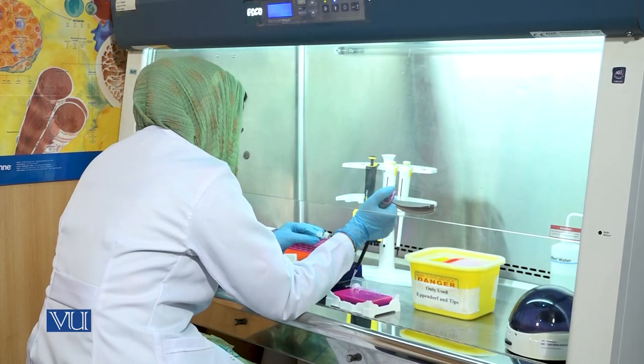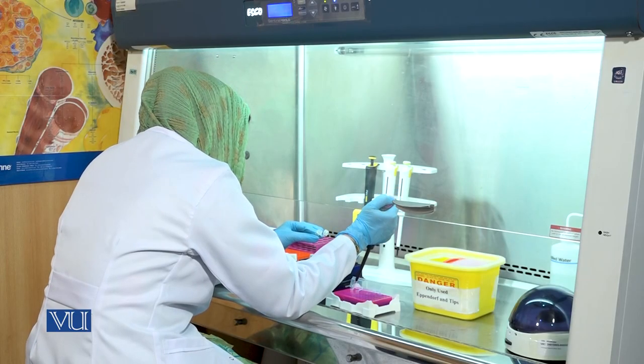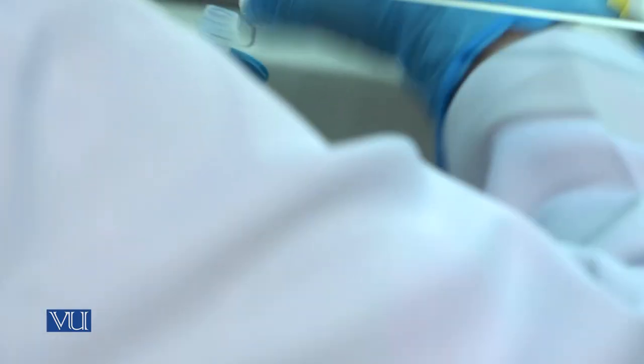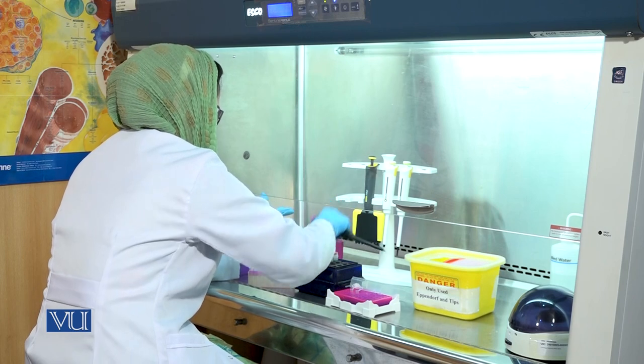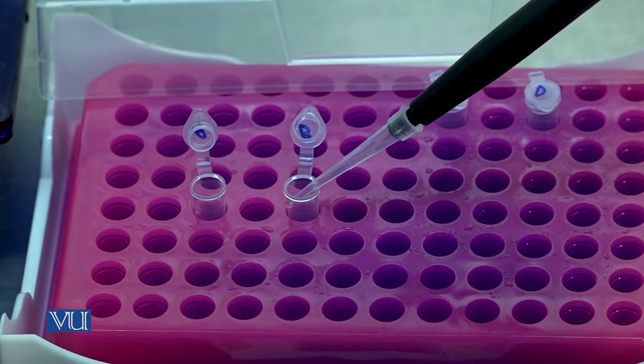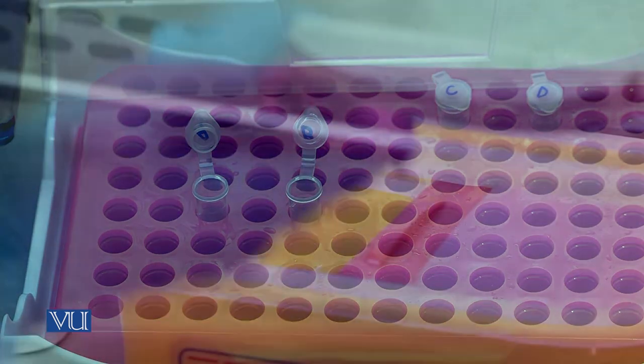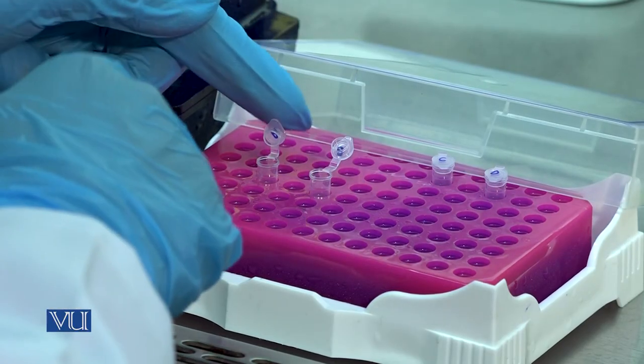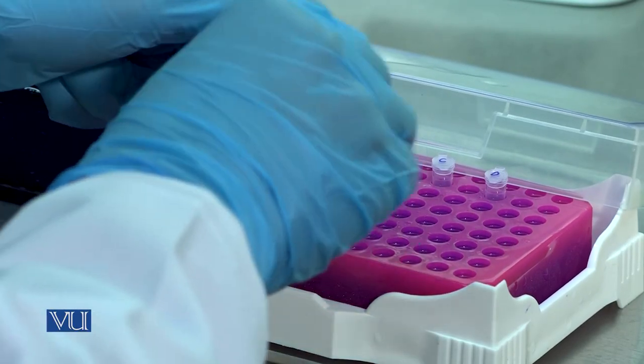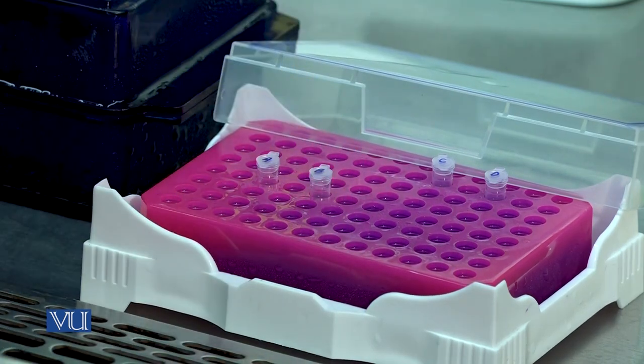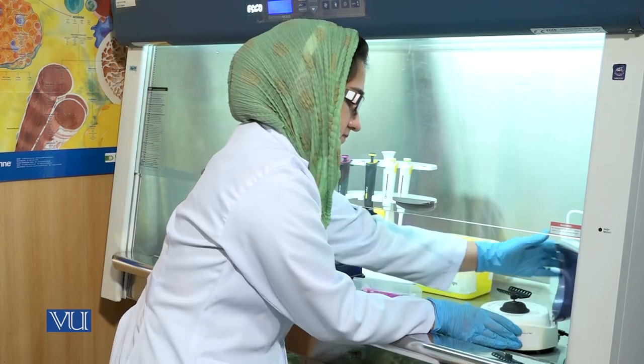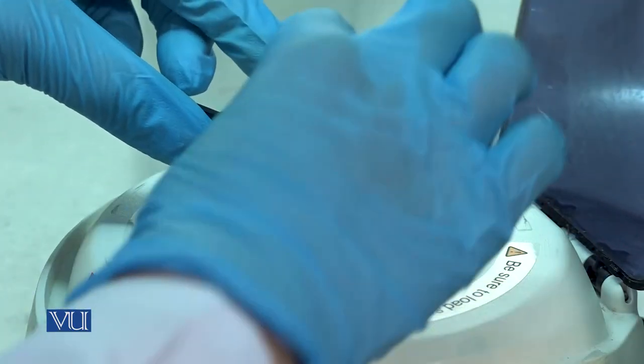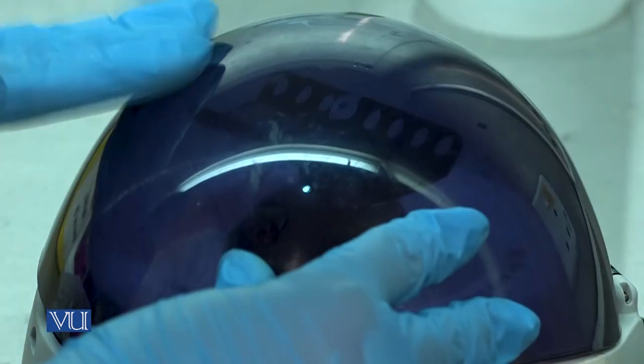Add 1 microliter of nuclease-free water into the PCR tubes. Close the lids of the PCR tubes. Place the tubes in the centrifuge and spin the tubes for a few seconds so that any reagent attached to the wall can settle down in the bottom of the tube.